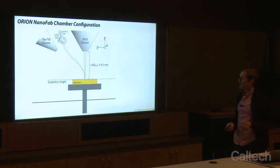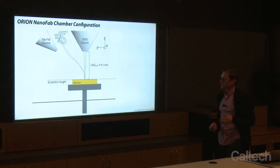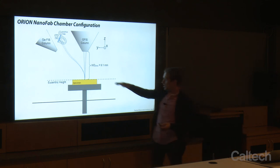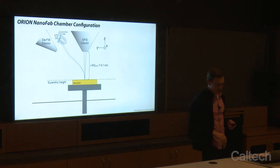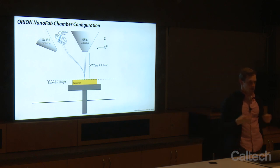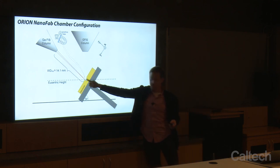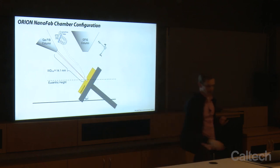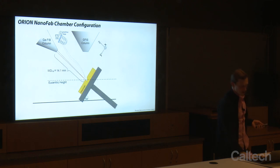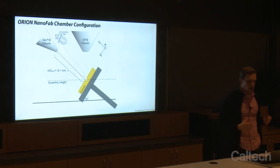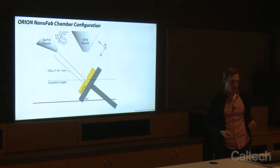Looking at a schematic of our chamber, it's similar to what we've seen with SEM and gallium FIB. On this system, our eucentric height is 9.1 millimeters — we have YouTube videos explaining what eucentric height is and how to get to it. It's the plane in the chamber where at any tilt angle, if your sample is at that plane, you can see the same thing at any tilt. At zero degrees or 54 degrees, you're looking at the same feature on your chip.